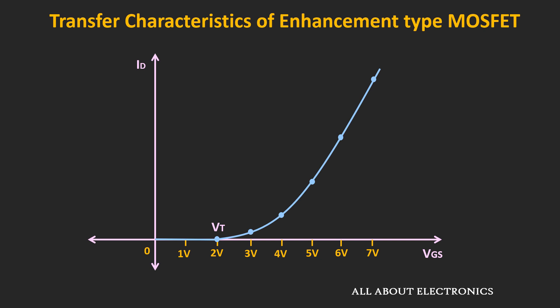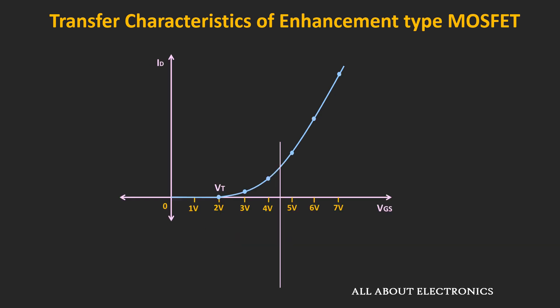If you see the transfer characteristic of this enhancement type of MOSFET, it starts conducting when the voltage Vgs is greater than the threshold voltage. That means whenever we directly apply a small input signal of a few mV between the gate and the source terminal, the MOSFET will not get turned on. So there has to be some DC biasing voltage which is greater than the threshold voltage, so that whenever we apply a small input on top of it, the MOSFET will remain in the ON condition.